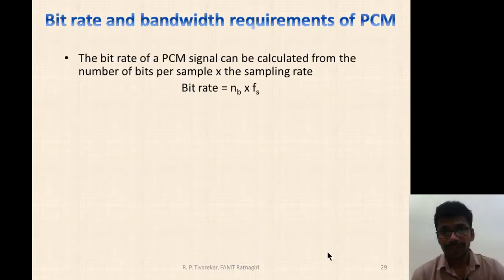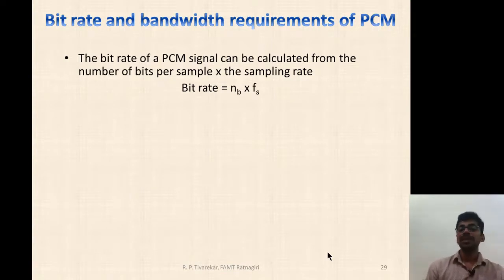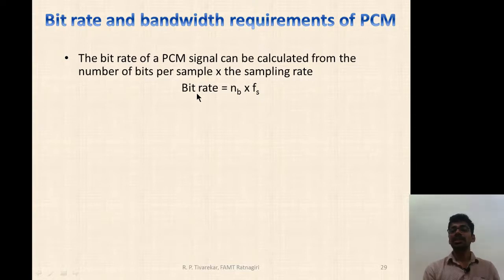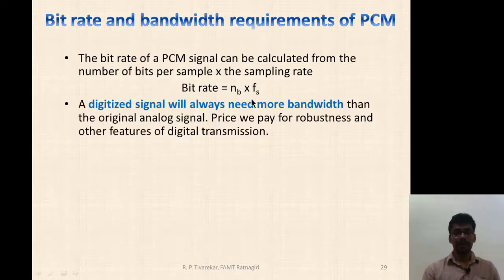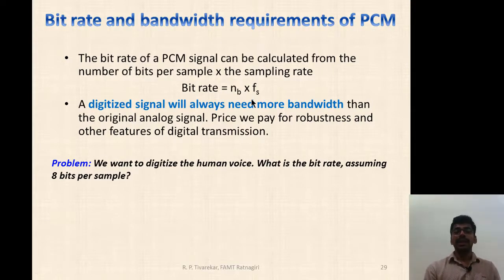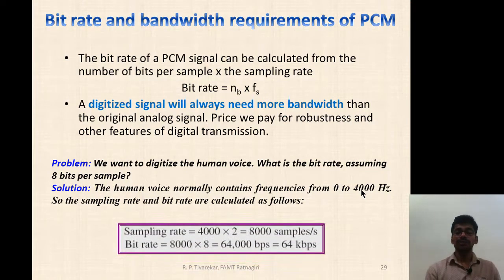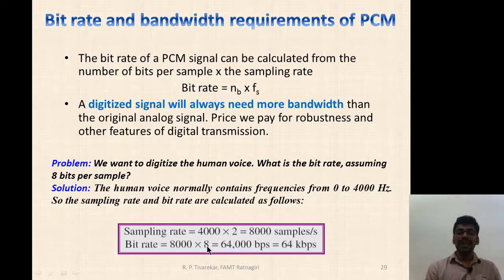The bit rate and bandwidth requirement of PCM can be explained with sampling frequency f_s and number of bits per sample N_b. If we have f_s samples per second and N_b bits per sample, then bit rate = N_b × f_s bits per second. For human voice with maximum frequency 4 kHz, sampling rate = 8,000 samples/second. Assuming 8 bits per sample, bit rate = 8,000 × 8 = 64 kbps.